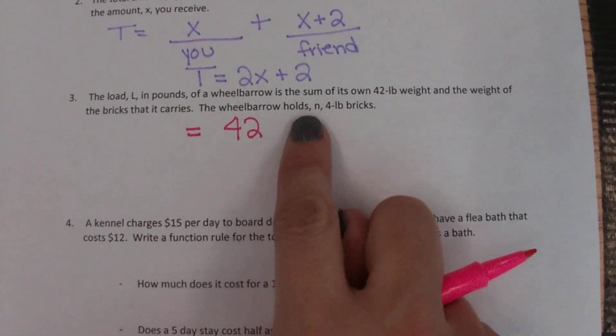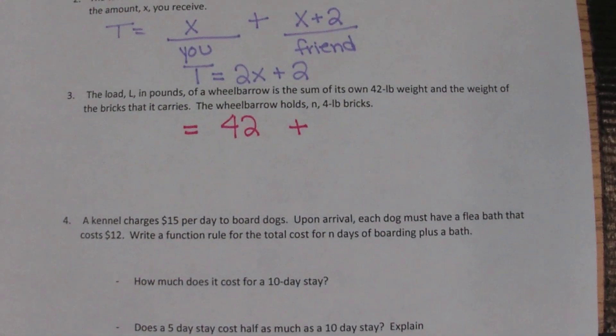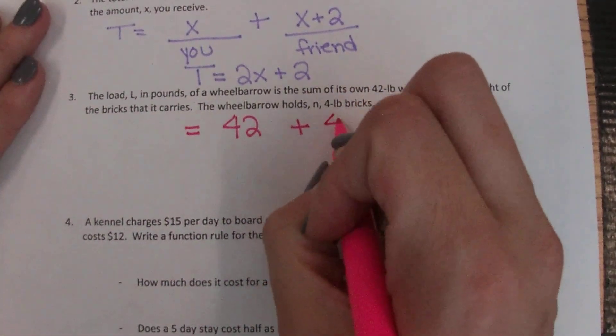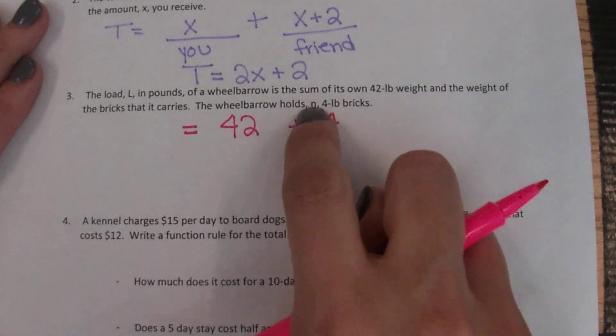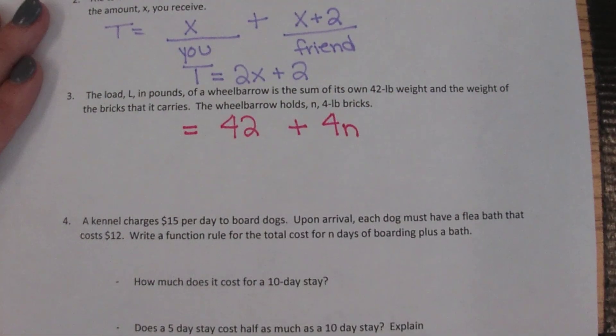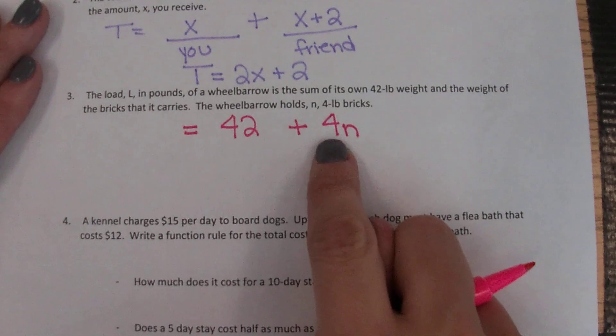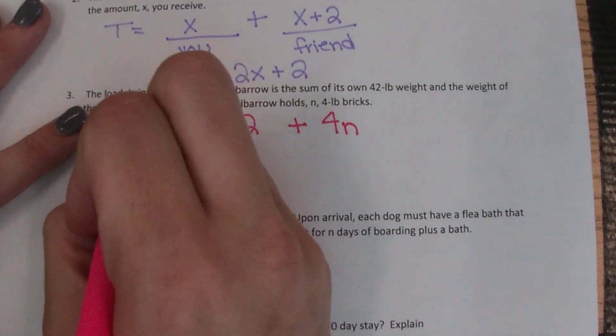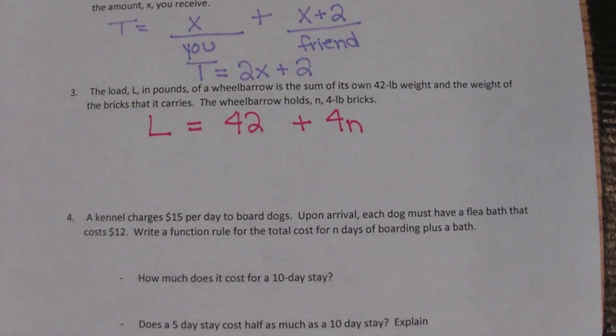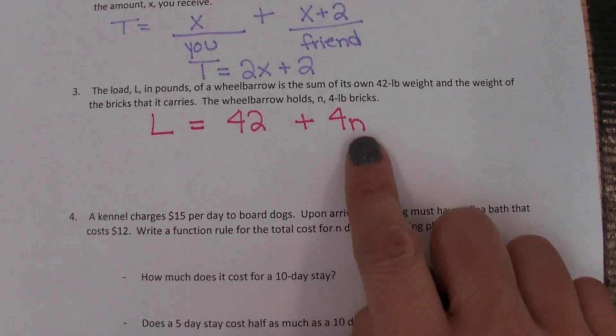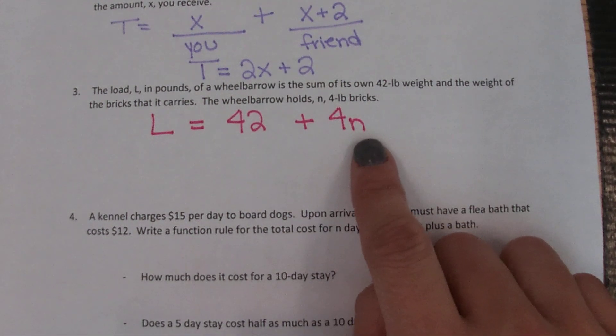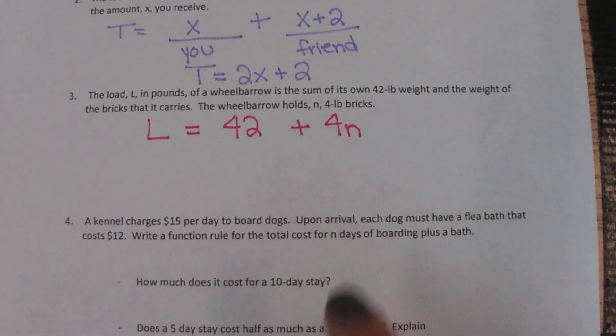It then tells us that the wheelbarrow holds n four-pound bricks. So it's four pounds per brick, so it's four pounds and it's happening per brick which is n. When anything's happening per item it gets the variable. We're gonna set that equal to the total it can carry which is L. Again there's nothing to solve, there's nothing else to do. We're just simply saying how much is that wheelbarrow carrying if we were to have ten bricks, if we were to have 20 bricks, if we were to have a hundred bricks. What would be the weight of what is in the wheelbarrow?